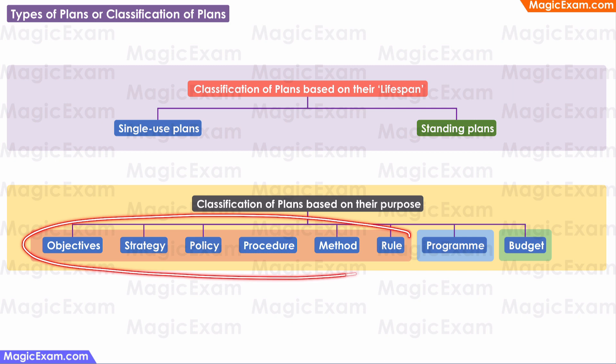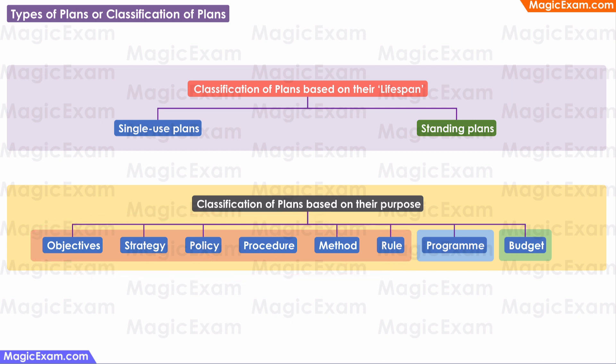There is a connection between the first six — that is, objective, strategy, policy, procedure, method, and rule — they are in a kind of hierarchy.